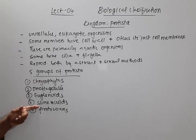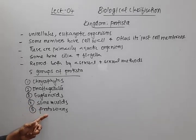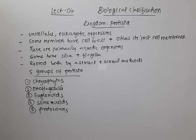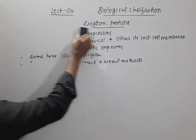Earlier, slime moulds were thought to be fungi and included under that kingdom, but they have since been separated. Similarly, euglenoids were earlier studied under protozoans but have been separated. Protozoans are believed to be the ancestors of animals — the Kingdom Animalia is thought to have evolved from this group. We will discuss each group — chrysophytes, dinoflagellates, euglenoids, and the rest — one by one.